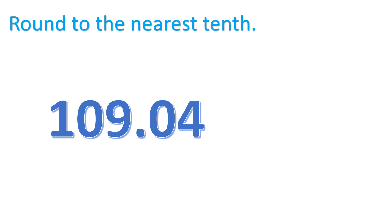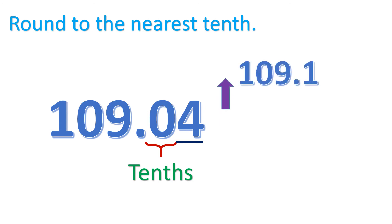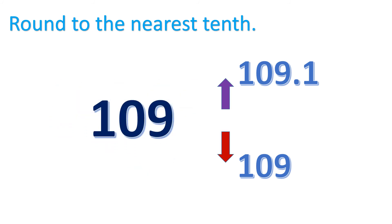Now how about 109.04? We are tasked to round this to the nearest tenth. Here's the tenths place, and we are going to look at the hundredths place because it is at the right side of the tenths place. If it's going up, it becomes 109.1, or if it's retained, it's going to be 109.0. Since the hundredths place is only 4, which is below 5, we are going to round down — meaning we retain to 109.0, or just simply 109.